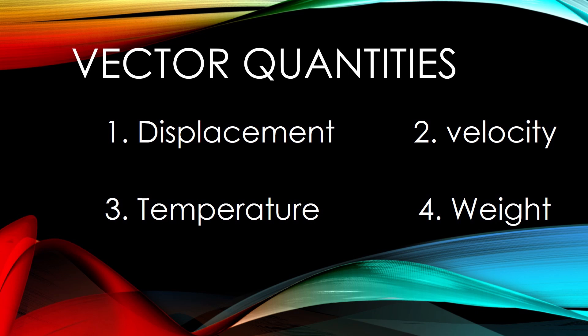Weight is a force, which is a vector — it has magnitude and direction. Mass is a scalar quantity. Weight and mass are related to one another, but they are not the same, because mass is a scalar quantity with only magnitude, while weight has both magnitude and direction.